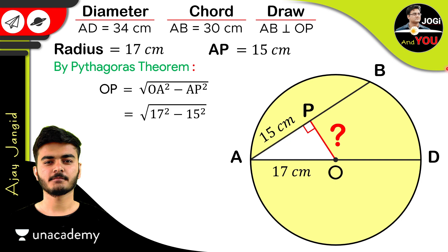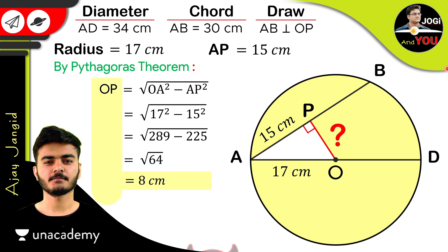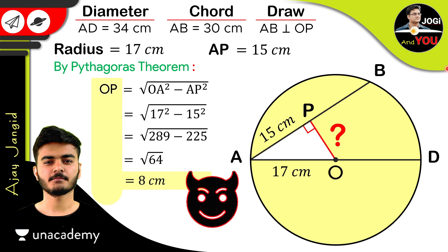Calculating: √(289 − 225) = √64 = 8 cm. So OP = 8 cm, and this is the distance between the center of the circle and the chord — which is exactly what we needed to find.